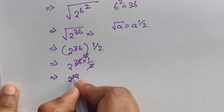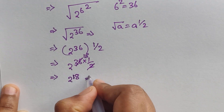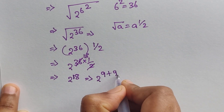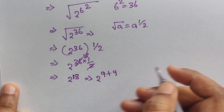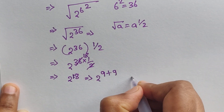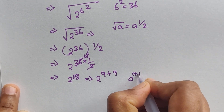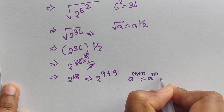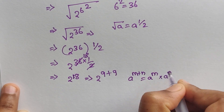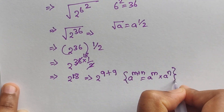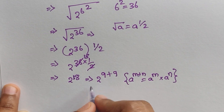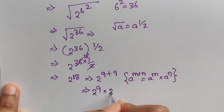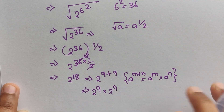Now, 2^18 can be written as 2^9 times 2^9, since 9 plus 9 equals 18. Here we can apply the formula: 2^18 equals 2^9 times 2^9. So we need to find the value of 2^9.